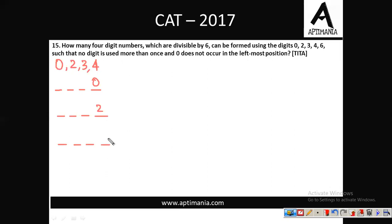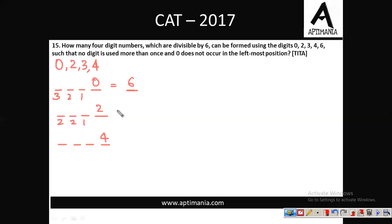Making 3 cases for combination {0, 2, 3, 4}: if 0 is at units place, 3 options for leftmost, then 2, then 1 = 6 numbers. If 2 is at units place, only 2 options for leftmost (not 0), then 2, then 1 = 4 numbers. If 4 is at units place, similarly 2 × 2 × 1 = 4 numbers. Total for this combination: 6 + 4 + 4 = 14 numbers.